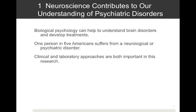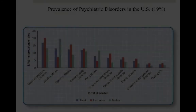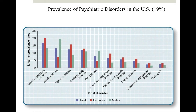Biological psychology can help us understand brain disorders and develop treatments. One in five Americans suffers from a neurological or psychiatric disorder. Clinical and laboratory approaches are both important. We'll have a chapter on psychiatric disorders covering major depressive disorder and anxiety — two of the most common, especially in females. For males, alcohol and drug abuse tends to be most common. Working in clinics in Northern California, I've seen that alcoholism is a condition you don't have to go far to witness.